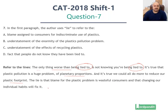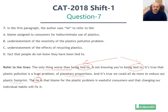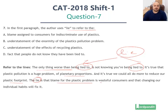The question specifically asks us what is the word 'lie' being used to refer to here. Even in the first line, even though it says the only thing worse than being lied to is not knowing you are being lied to — what is the lie in this particular case? The author is using 'lie' to refer to the fact that the blame for the plastic problem is wasteful consumers and that changing our individual habits will fix it.